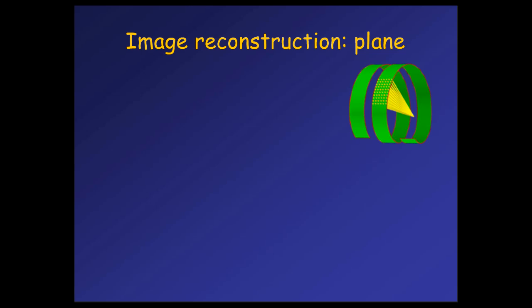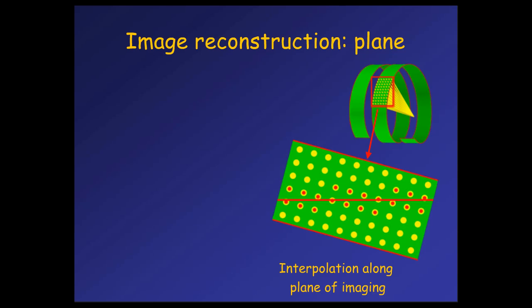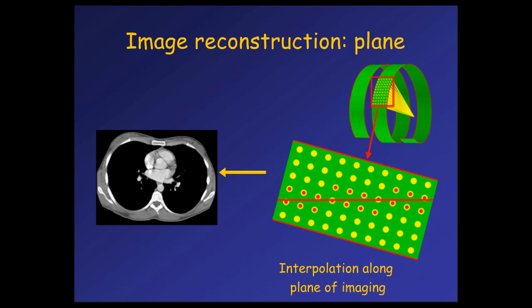You have this helical data set. What do you do with that? You have to reconstruct images. You can reconstruct images along any plane that you want. The helical data set is used to generate volumetric data. To generate a specific image along a specific plane, you simply do interpolation of the data from the detectors that were along that plane when the patient gets scanned. And so you end up with an image.